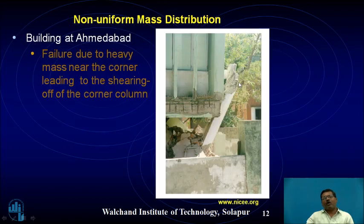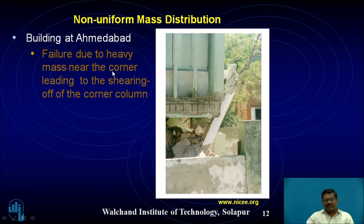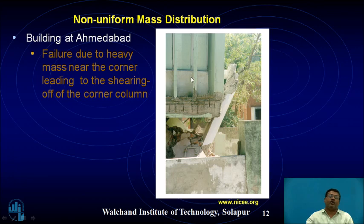In another photograph, the corner column is observed to be damaged due to non-uniform mass distribution. This is a building in Ahmedabad where heavy mass near the corner led to shearing of the column — the column section sheared off completely.